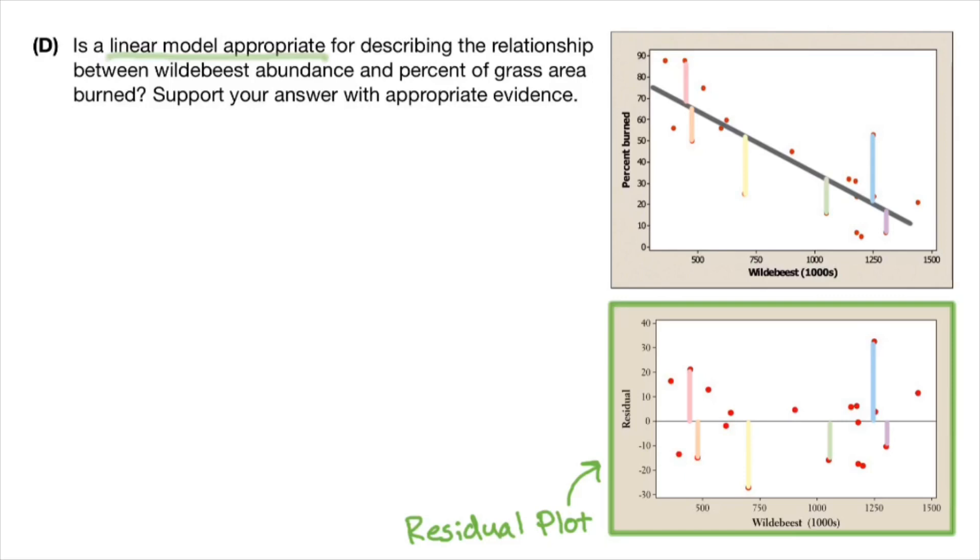So what happens is we are subtracting out the linear relationship between number of wildebeest and percent of grassy area burned. And then what we're seeing in the bottom residual plot is the leftover relationship when I get rid of the linear relationship. The leftover relationship isn't all that much. It doesn't look like it's going anywhere. There's no curve. There's no other line. It's just kind of blah.